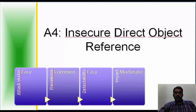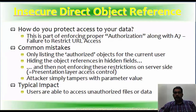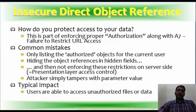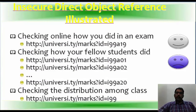We now go to A4 — Insecure Direct Object Reference. The attack vector is easy, prevalence is common, detectability is easy, and impact is moderate. This is part of enforcing proper authorization along with A7 of OWASP — failure to restrict URL access. Common mistakes include only listing authorized objects for the current user, hiding object references in hidden fields, and not enforcing restrictions server-side. The attacker simply tampers with the parameter value. The typical impact: users are able to access unauthorized files or data.